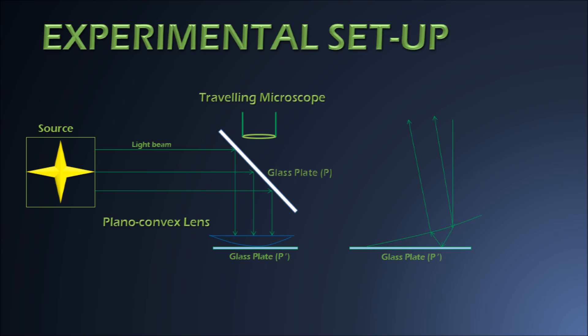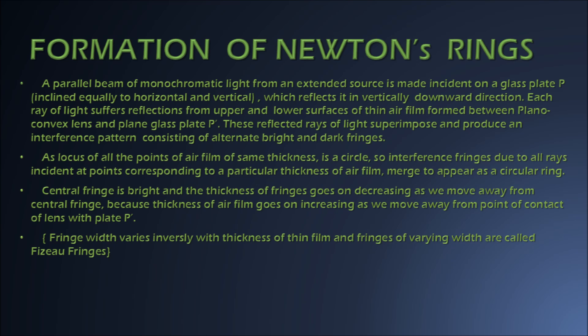The refracted ray suffers a reflection from glass plate P' and gets transmitted through the plano-convex lens. Both these reflected beams of light superimpose and give rise to an interference pattern consisting of bright and dark fringes. For a particular thickness of air film the width of the fringe is different.